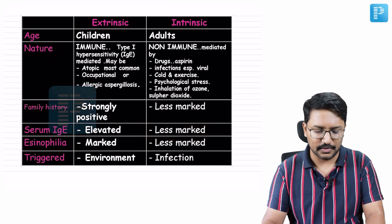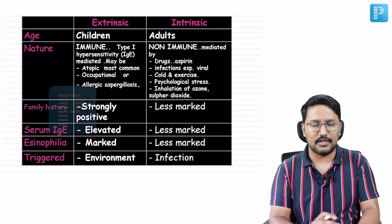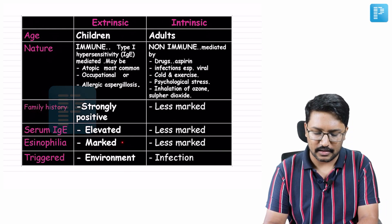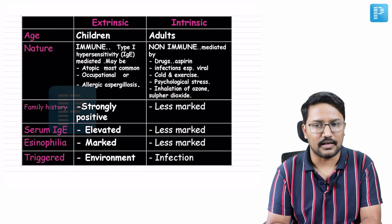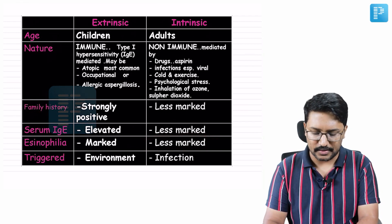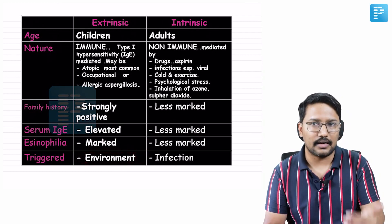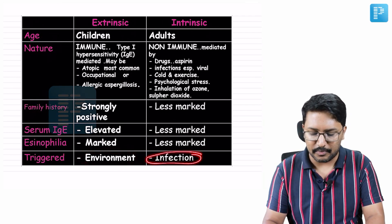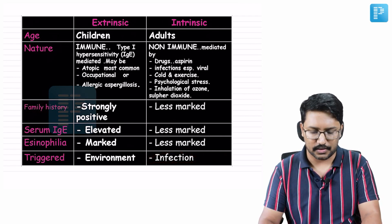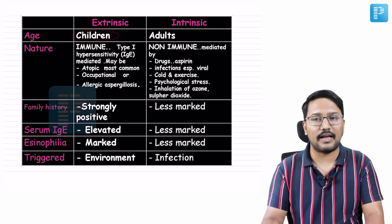Eosinophils play an important role in the inflammation of type one hypersensitivity in extrinsic asthma, so marked eosinophilia is seen in extrinsic asthma — less marked in intrinsic asthma. The triggering factors also differ: environmental allergens trigger extrinsic asthma, while infections and chemical irritants — which are not allergens — trigger intrinsic asthma.